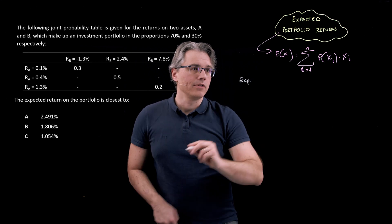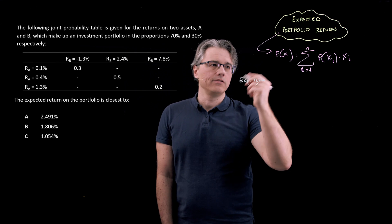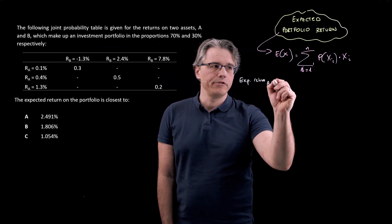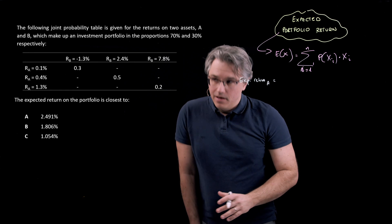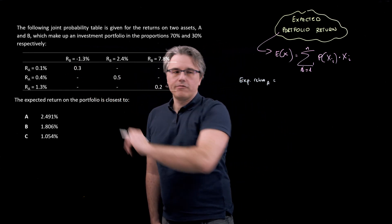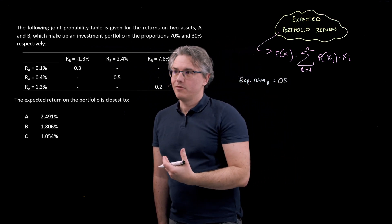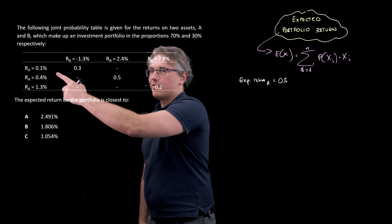So let's write this down. Expected return on portfolio A is going to be simply the probability, the relevant probability, like here 0.3, sorry, not 0.3%, 30% or 0.3 times the relevant return, which is a 0.1% return.